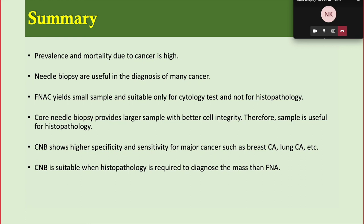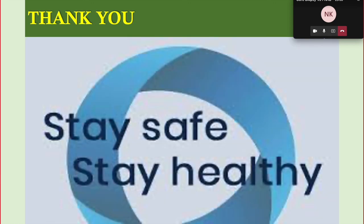To summarize: the prevalence and mortality of cancer is high, and needle biopsies are very useful with minimal risk of bleeding. FNAC yields small samples suitable only for cytology, not for histopathology required for most carcinomas. Core needle biopsy provides larger samples with better cell integrity, suitable for histopathology. Core biopsy has higher specificity and sensitivity for major cancers like breast, lung, and prostate carcinoma, and is the preferred choice when histopathology is required.